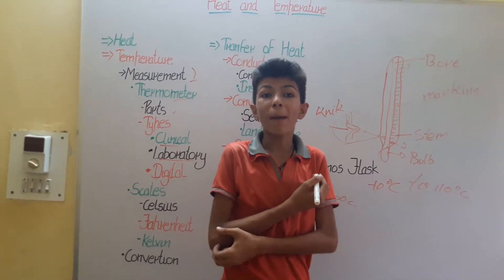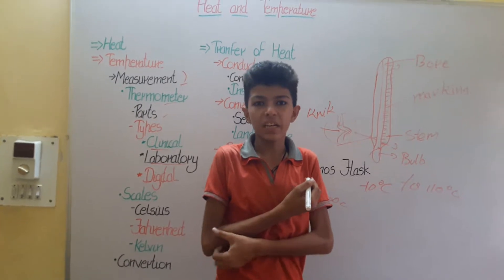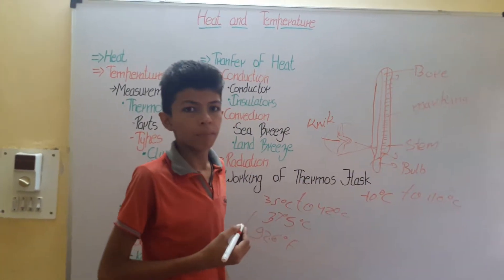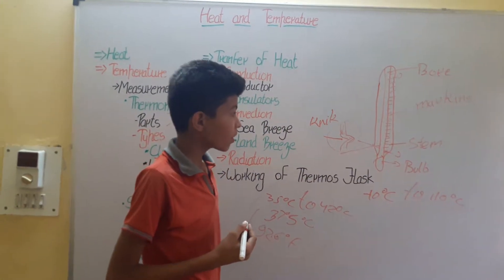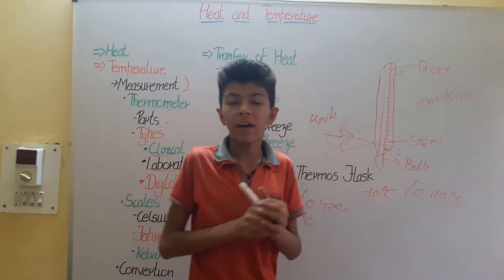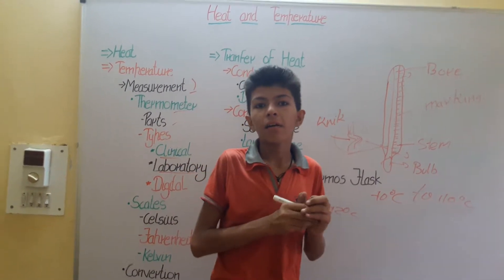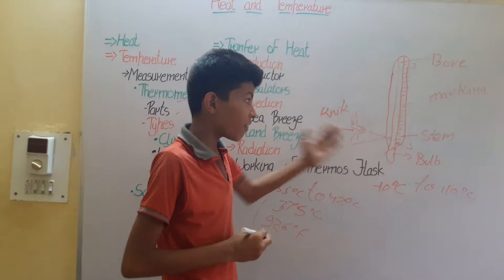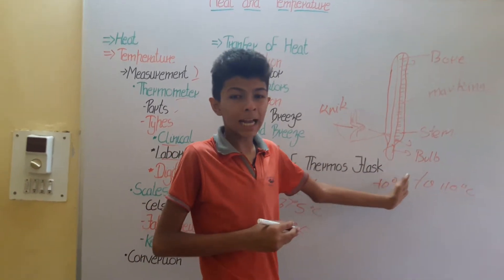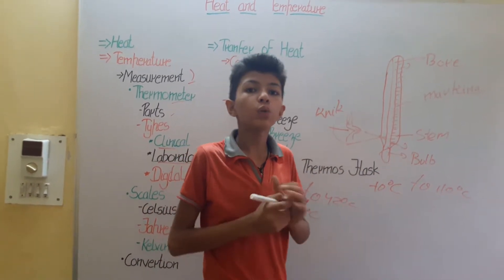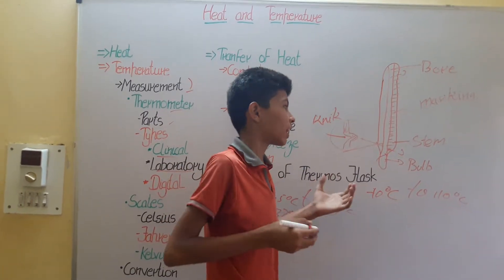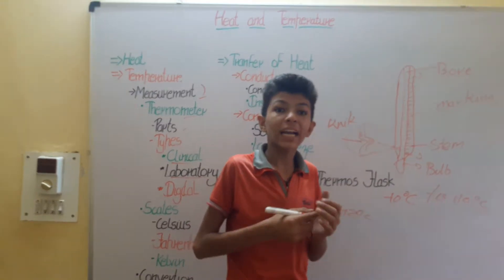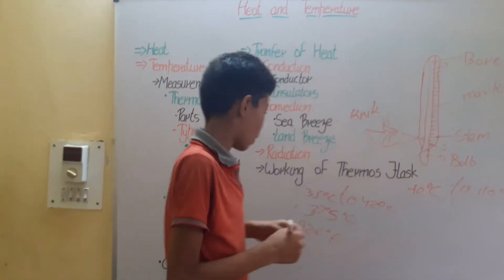Mercury is mostly and widely used in thermometers because it can remain liquid at very high and very low temperatures. It is also an opaque material. However, mercury is a harmful substance — if the bulb breaks, the mercury can flow out and if it enters the body it can lead to death.